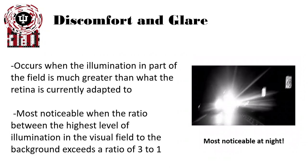There's typically discomfort involving glare, and this occurs when the illumination in part of the field is much greater than what the retina is currently adapted to. It's most noticeable when the ratio between the highest level of illumination from the visual field to the background exceeds a ratio of three to one. That's often why it's most noticeable at night, where in a dark field the oncoming car headlights are at much higher light levels — often above this three to one ratio — and the glare can be very discomforting and distracting for the patient.